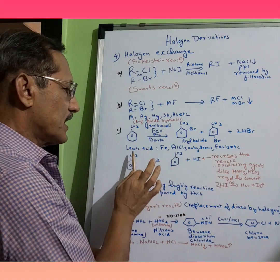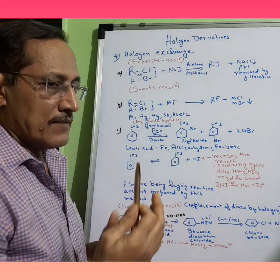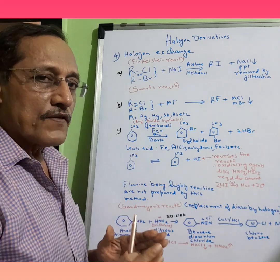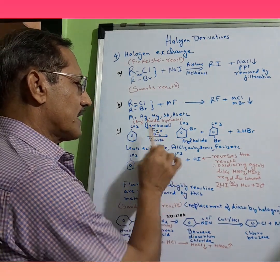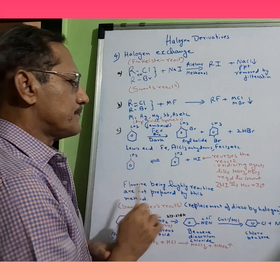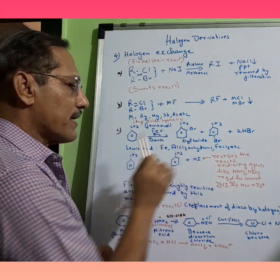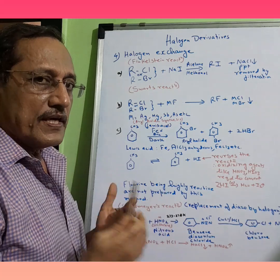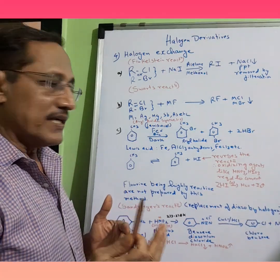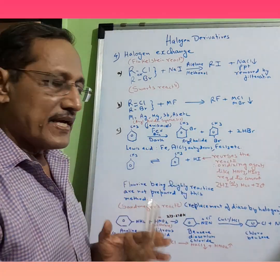In these reactions we require Lewis acid. Lewis acid is all those which are running short of electrons. Lewis acid could be Fe in the dark, aluminum chloride anhydrous, or FeCl₃. This is sort of Friedel-Crafts reaction.